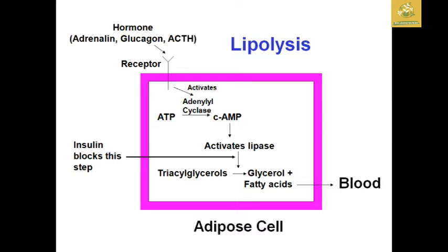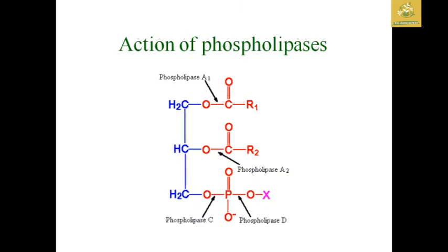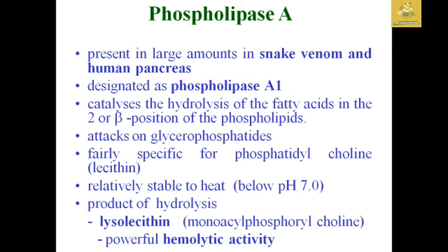When triacylglycerides are converted to glycerol plus fatty acids, they mix into the blood and are transferred to all the cells of our body for energy. After that, I will tell you about the action of phospholipids. Phospholipases act on the bond between carbon and oxygen. I have shown a simple reaction of how phospholipases A1, A2, C, and D act upon their substrates.